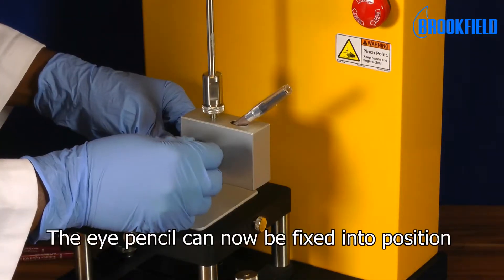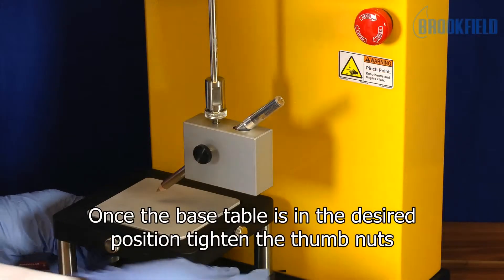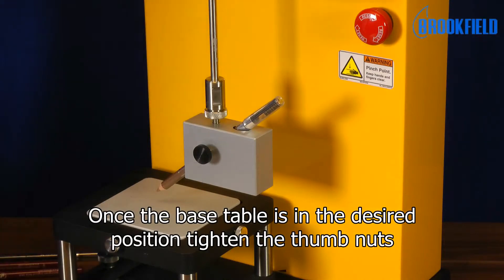The eye pencil can now be fixed into position. Once the base table is in the desired position, tighten the thumb nuts.